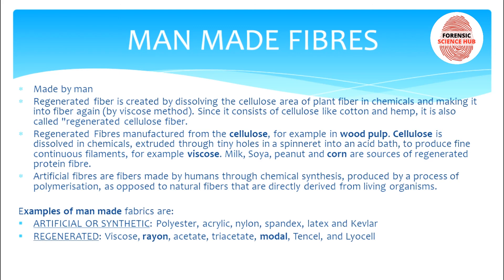Artificial or synthetic fibers are made by humans through chemical synthesis, specifically by the process of polymerization, in which various monomers are linked together to form a polymer. Examples of artificial or synthetic fibers include polyester, acrylic, nylon, spandex, latex, and Kevlar. Regenerated fibers include viscose, rayon, acetate, triacetate, modal, Tencel, and Lyocell. That covers all about fibers — please like, share, and subscribe to my channel.